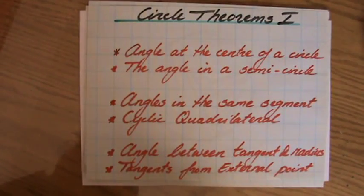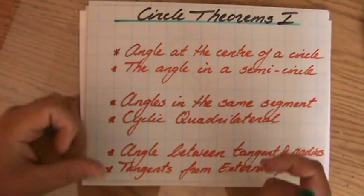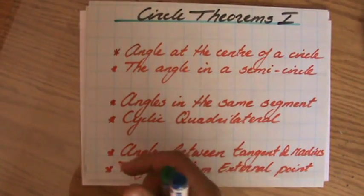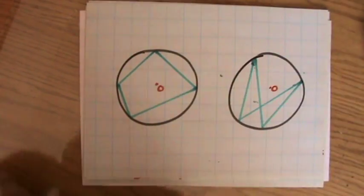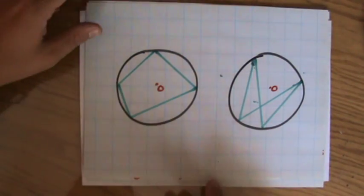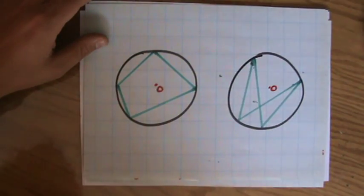Now, the next video, we are going to look at angles in the same segment. So we are going to leave the center of the circle, and we're going to have a look at situations like this. Okay? So it doesn't go through the center anymore. So I hope to see you there. And otherwise, have a very pleasant day. Bye-bye.